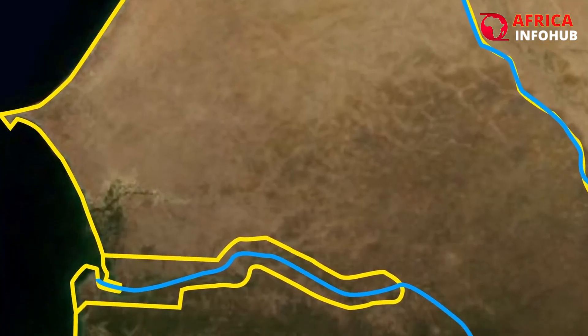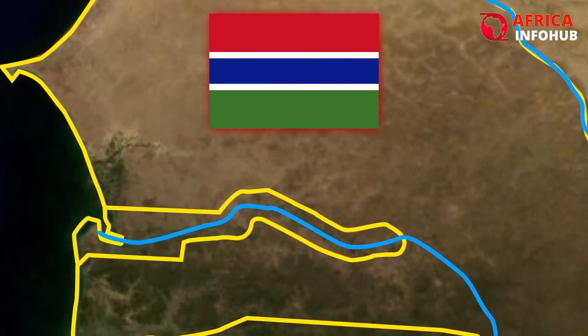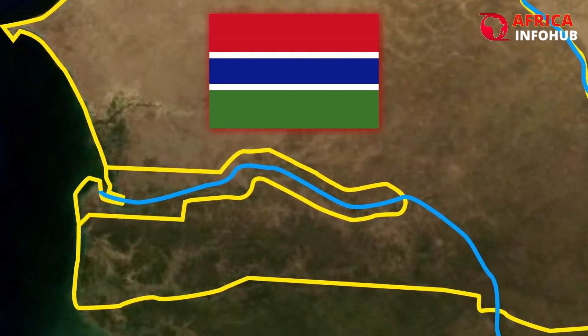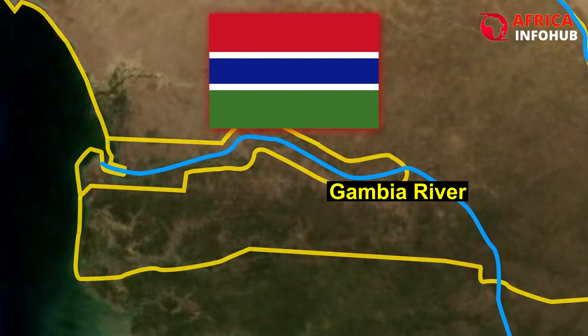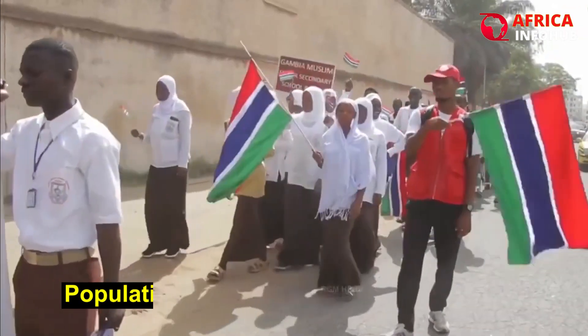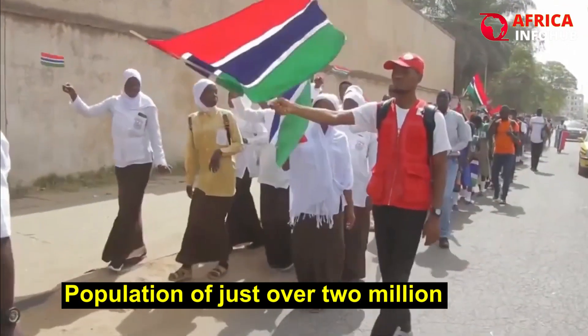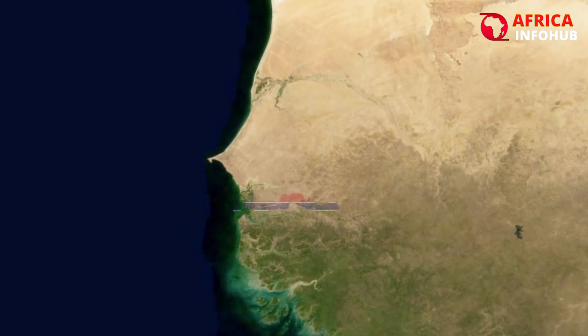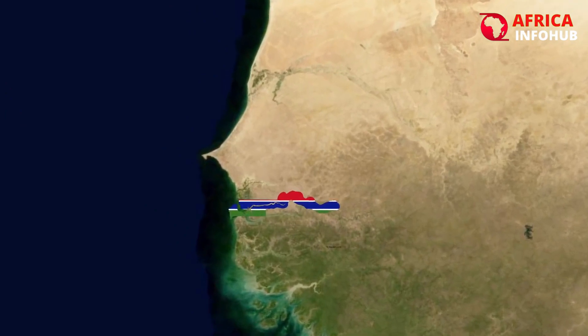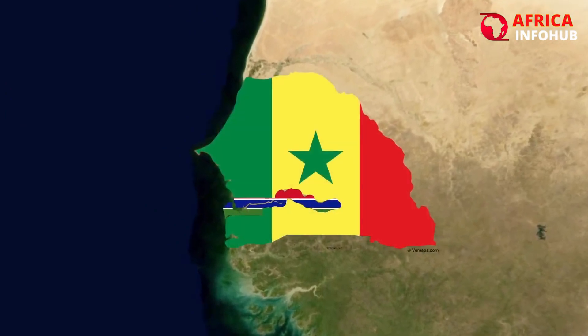The Gambia, a small West African country, is located on the banks of the Gambia River. With a population of just over 2 million people, it is one of the smallest countries on the African continent.